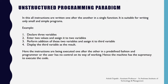In the unstructured programming paradigm, all the instructions are written one after the other in a predefined fashion. The program is executed one by one as the instructions are declared. For example, here is a program for adding two numbers. First, we declare three variables. Then we assign values to two of them. We perform the addition of these two variables and assign the result to the third variable, which is then displayed to the user. The instructions are executed one after the other, and the machine has the supremacy to execute the code — the user cannot control the code.